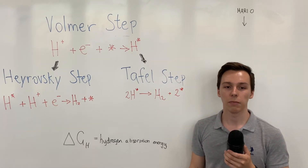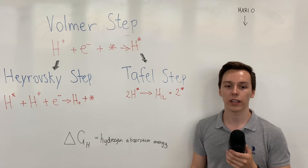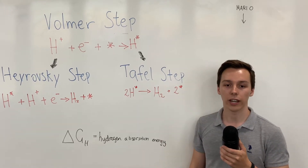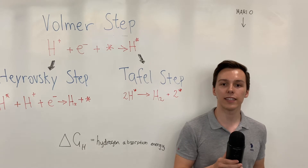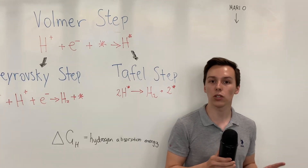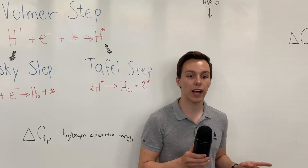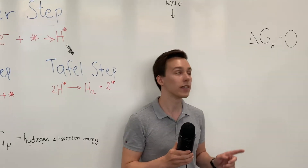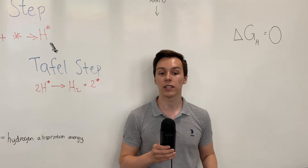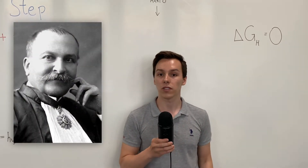On the other side, if the binding is too strong, the desorption step — which can be either the Heyrovsky or the Tafel step — will limit the rate. So the sweet spot for the best catalytic activity would be reached when the binding is neither too weak nor too strong. In other words, when the hydrogen adsorption free energy is equal to zero. This is also known as the Sabatier principle, named after the French chemist Paul Sabatier.